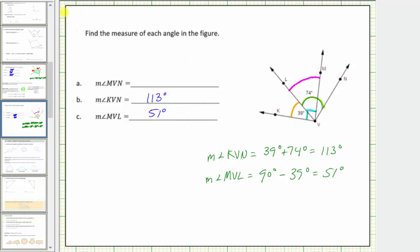To check our work, let's label this angle. If this angle is 51 degrees, notice how 51 degrees plus 39 degrees equals 90 degrees, and these two angles together do form the right angle KVM.